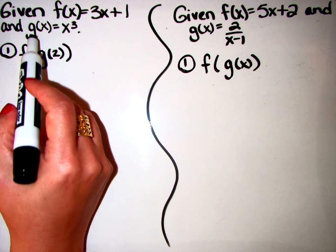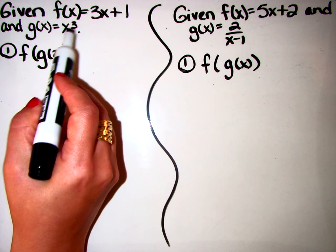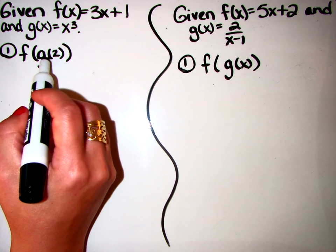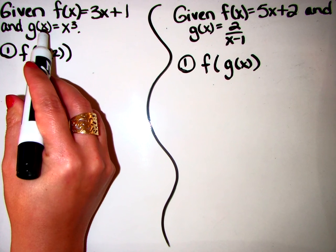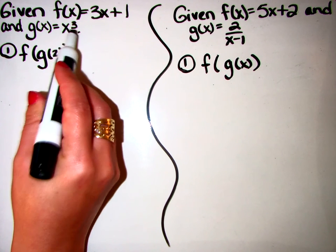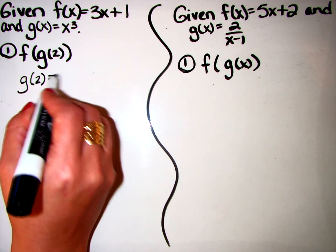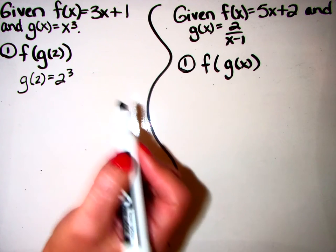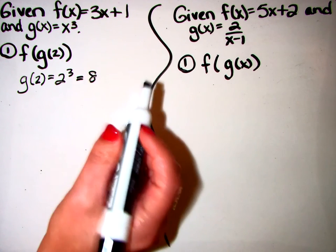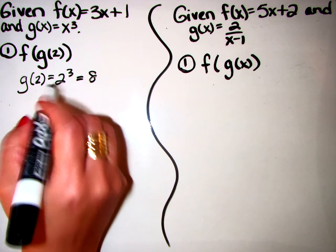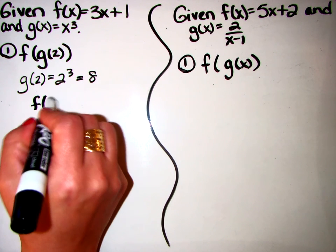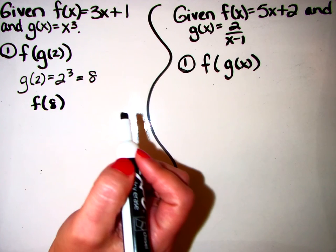So do you see how this is g of x and you have x cubed? So if it says g of 2, that just means replace your x with a 2. So g of 2 is equal to 2 cubed. 2 cubed is 8. So now I know that is 8. So now I have f of 8.